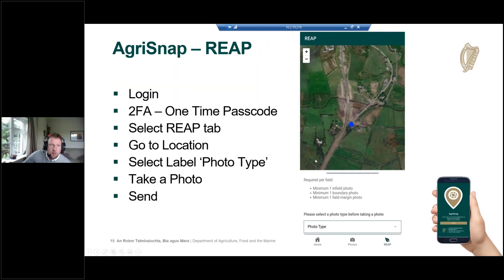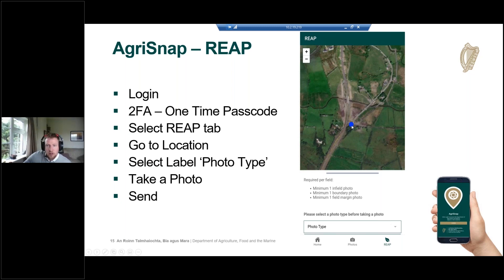Now to describe AgriSnap for the REAP project. You'll log in with your two-factor authentication and one-time passcode. Once logged in, you'll see a REAP tab in the bottom right-hand corner, which shows a map screen. You can zoom in and out on the map; the dark blue circle shows your location, which updates as you move around the field. There are instructions on what's required per field, and you'll be able to apply a photo type label to each photo. Once you've selected the photo type label, you take the photo and press send.